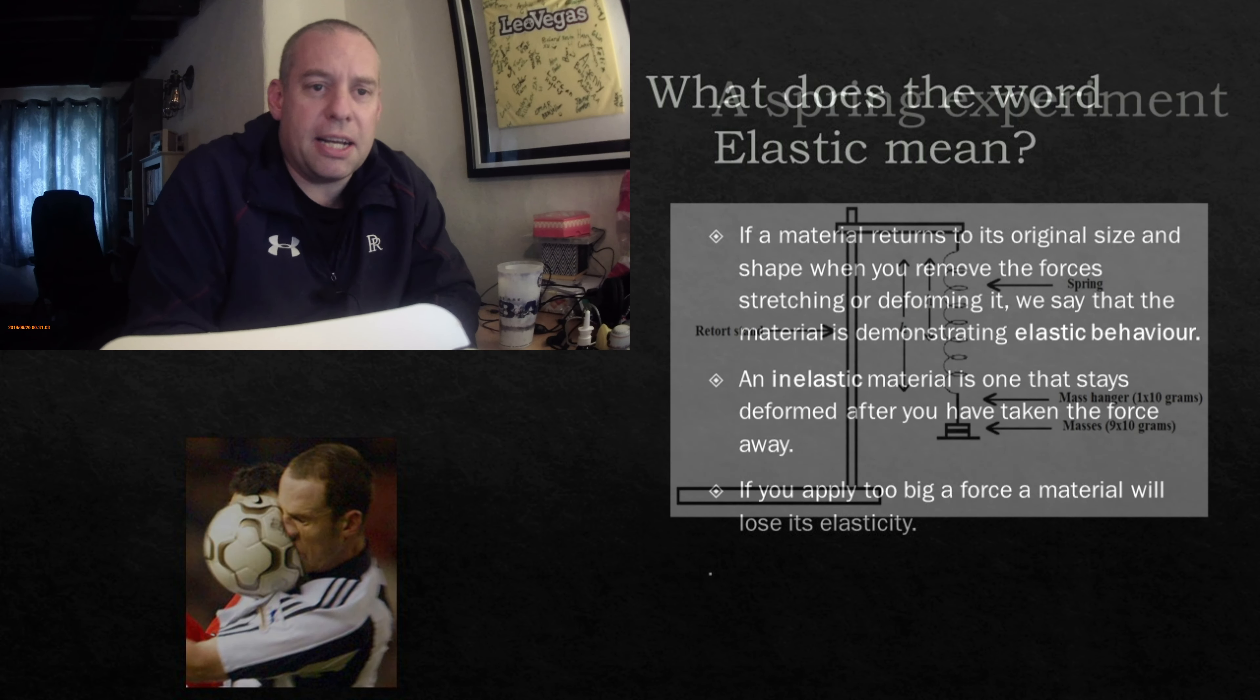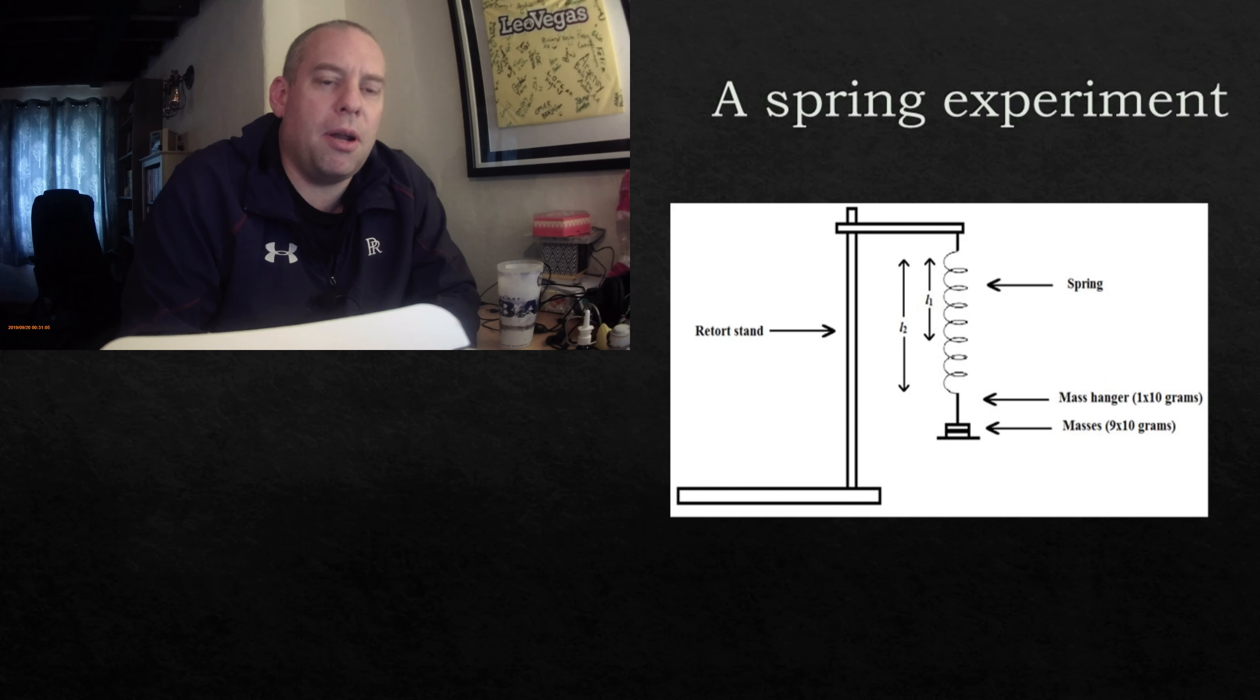So let's start off with an experiment. Here is a diagram of an experiment I'm going to go to the lab and do. We've got a stand, a boss and clamp, with a spring attached to it. And attached to that, we're going to put some masses. The measurements we're going to take are the length of spring and the length of the extension. So let's go to the lab now and do this experiment.